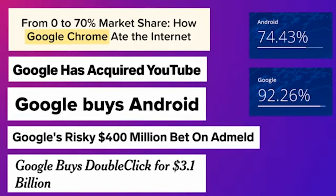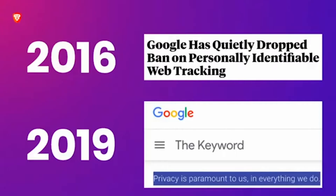If you look at Google buying DoubleClick and Google buying Ad Meld, in my opinion those are the two biggest moves that they made to hyperdrive programmatic advertising and the way that publishers and businesses monetize on the web today. As a result, Google now has 74% of the mobile operating system market with Android and 92% of global search engine market share, and is one of three or four companies that basically runs all advertising online.